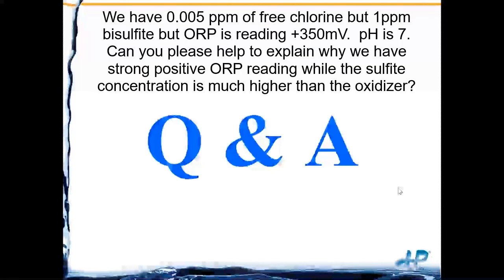Question: we have 0.005 PPM of free chlorine but 1 PPM bisulfite, yet ORP is reading 350 millivolts at pH 7. Can you explain why we have a strong positive ORP reading when sulfite concentration is much higher than the oxidizer? That's a chemistry question I'd need to research further — I don't want to state it wrong, so I'll get the right person in contact with you.